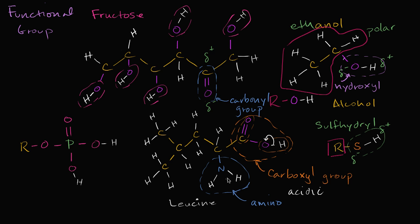Another thing sometimes discussed is hydrocarbon groups. For example, if we consider the main chain of carbons in this molecule, the branching part — one carbon bonded to three hydrogens — would be called a methyl group. Remember, the prefix 'meth' refers to one carbon. In general, when you have a hydrocarbon bonded to other hydrocarbon groups, these are hydrophobic — there's nothing polar about them, so these parts of the molecule won't naturally dissolve in water.